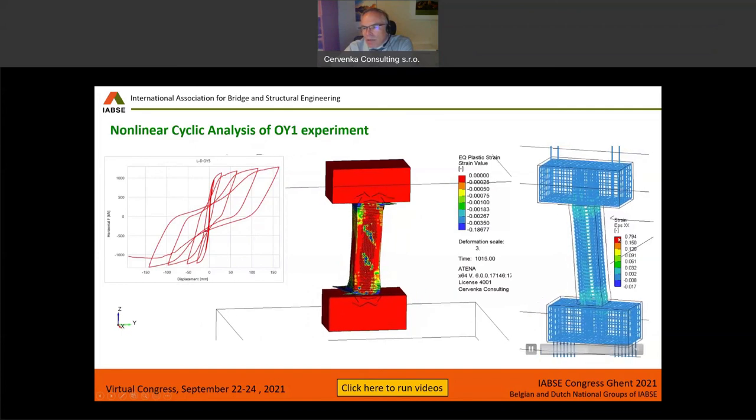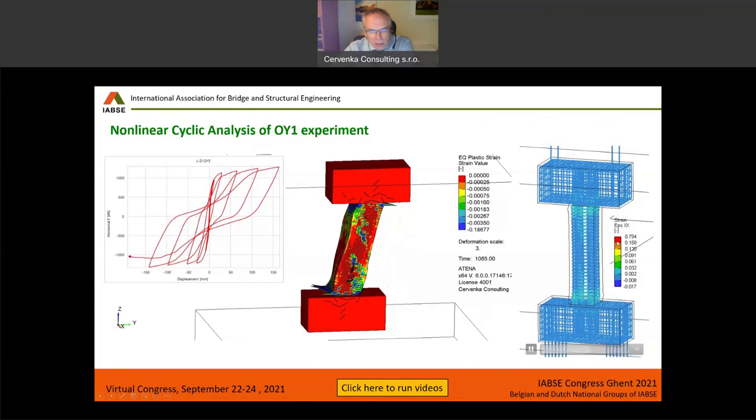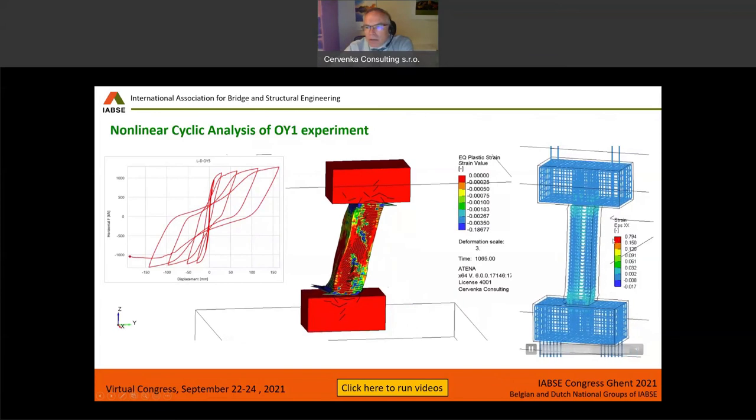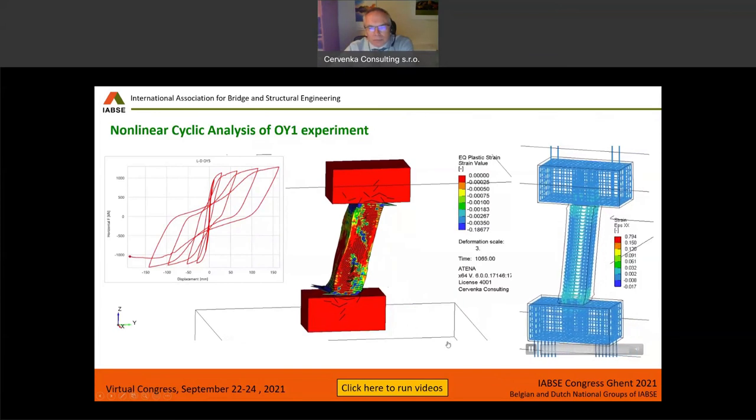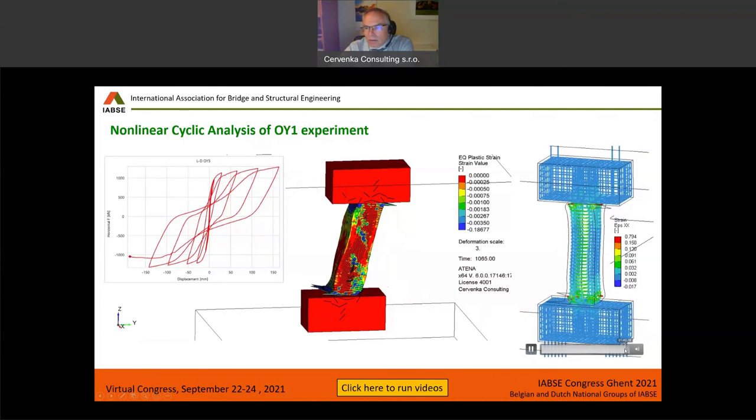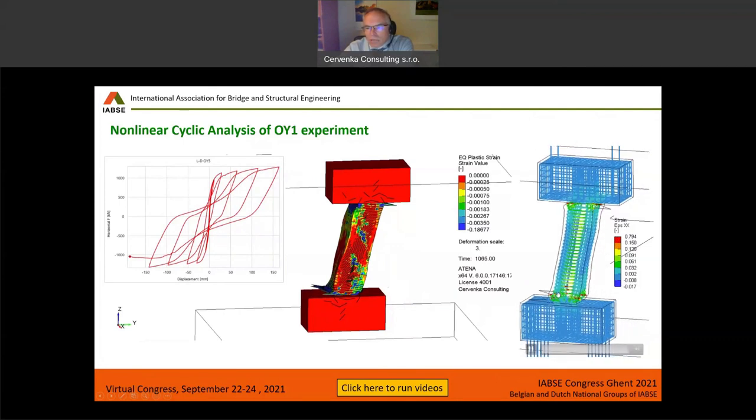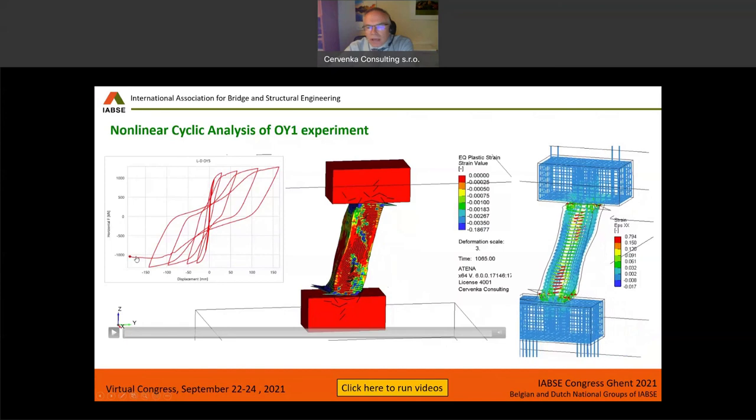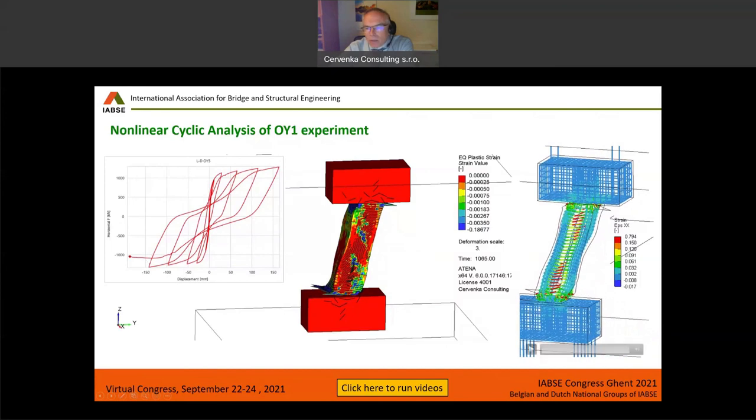And when we see reinforcement reaching this red color, this means we have a rupture of the reinforcement. So if I go to the end to see how this reinforcement, when we are reaching this end of the analysis, this is how it ruptured.